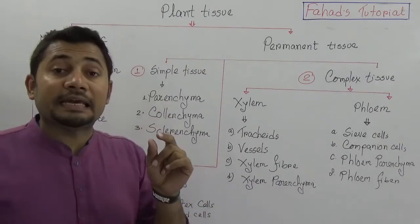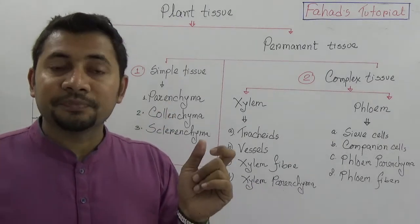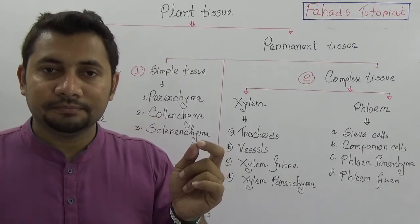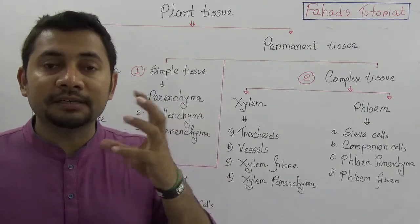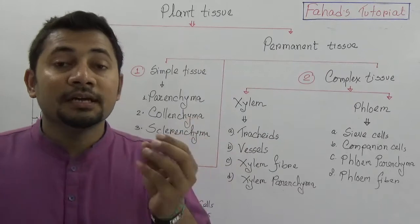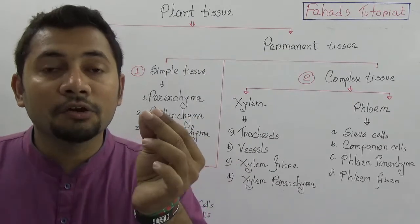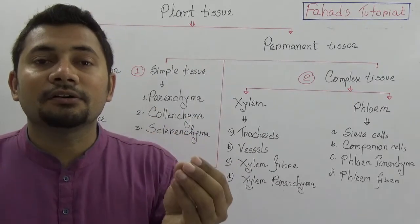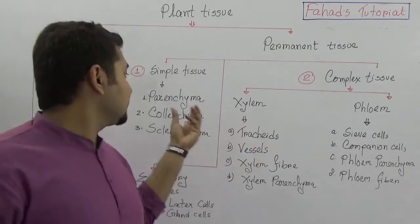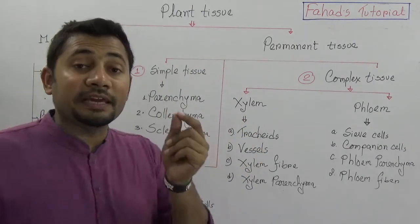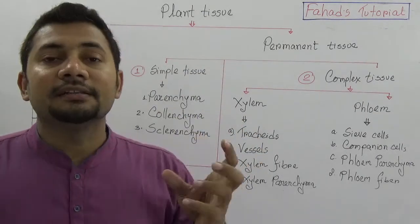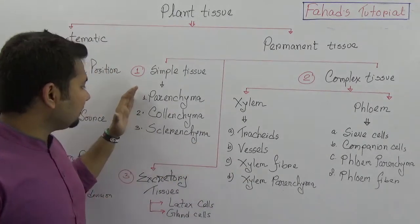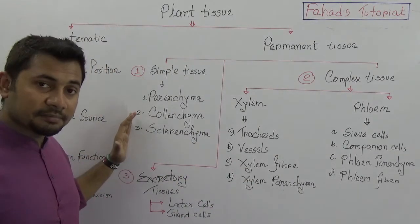There are also words like aerenchyma and chlorenchyma. Those simple tissues like parenchyma that have chlorophyll inside are called chlorenchyma. And those that have some sort of air chambers inside are called aerenchyma. So parenchyma, collenchyma, and sclerenchyma are the three types of simple tissue.